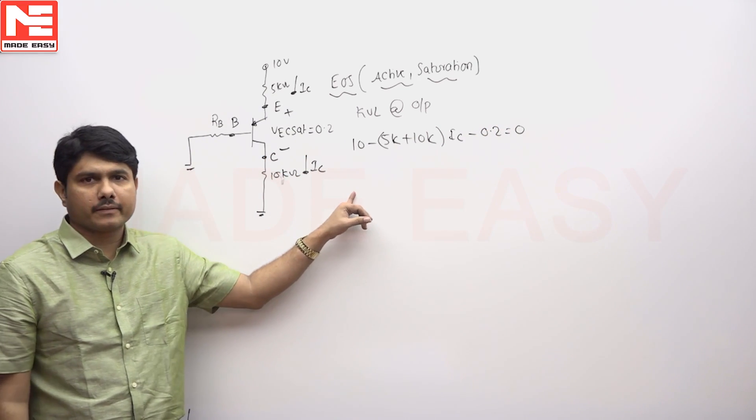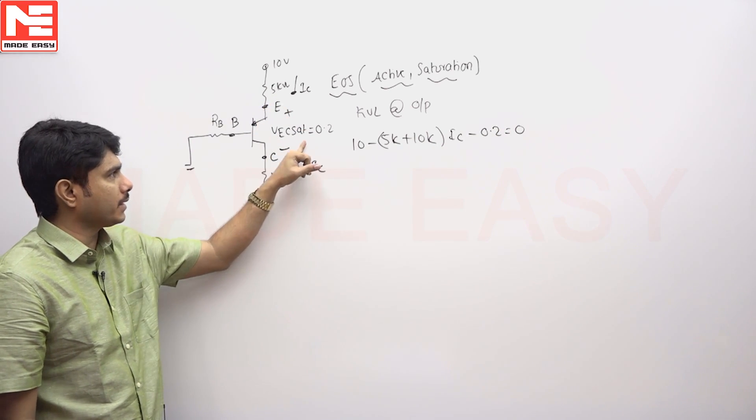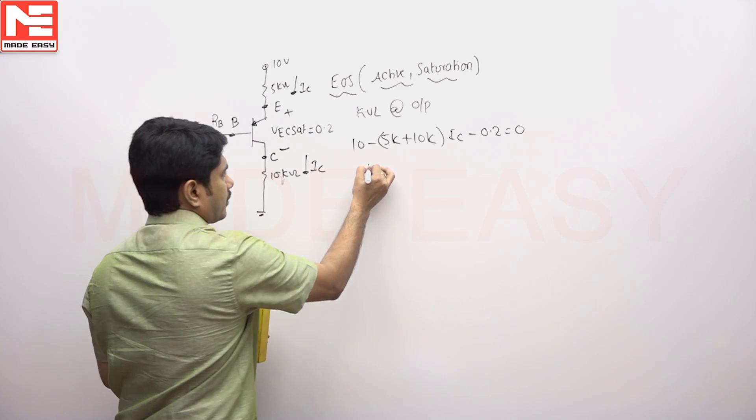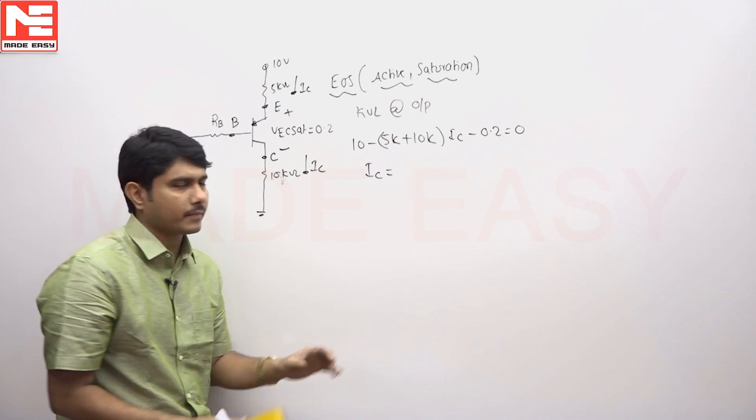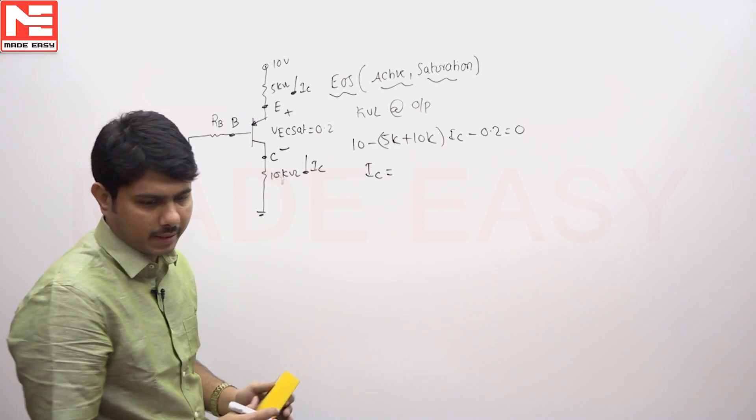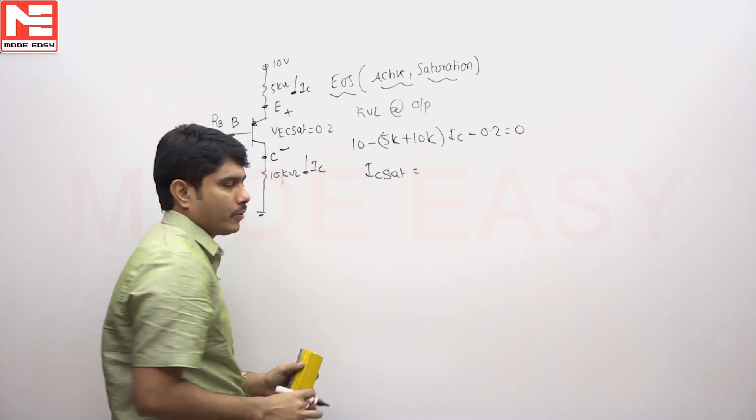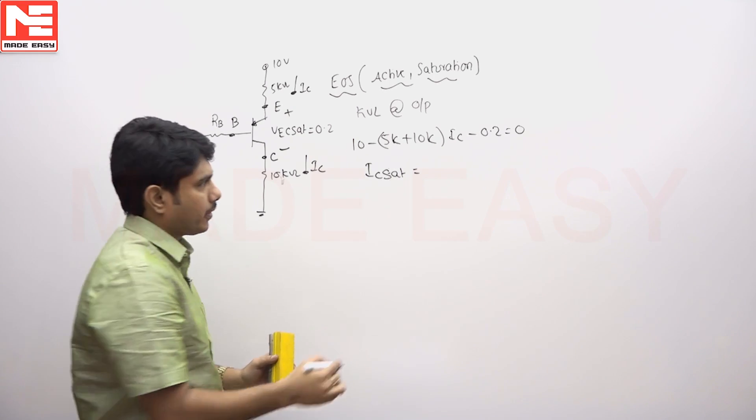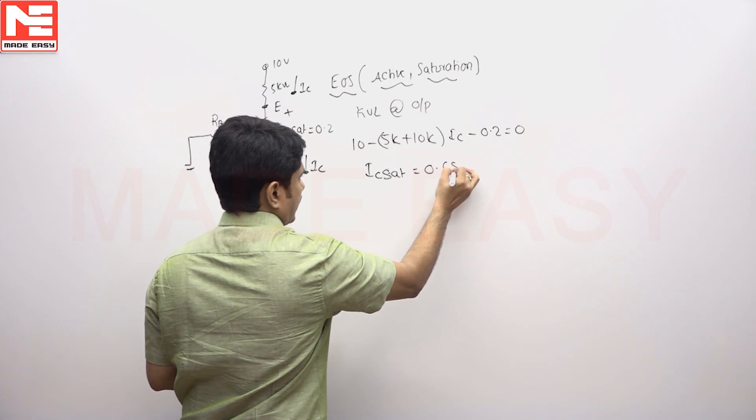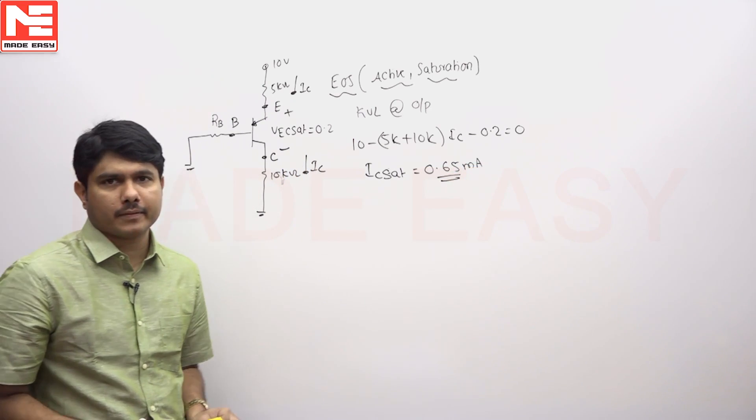So plus 10K into IC minus VEC sat that is 0.2 is equal to 0. If you write this KVL equation 10 minus 5K plus 10K into IC minus 0.2 is equal to 0 you are expecting the IC current. You will get the value of IC. It came approximately IC sat value as IC sat otherwise boundary value it is 0.65 milli amperes. IC sat value is coming 0.65 milli amperes.